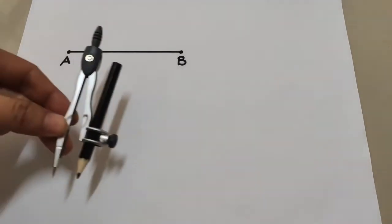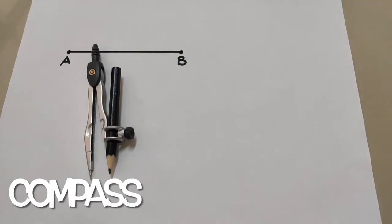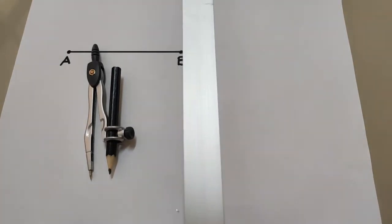Hello everyone, I'm teacher John and for this video we will be constructing congruent segments. Shown on this paper is segment AB. To construct a segment congruent to segment AB, we need a compass and a straight edge.